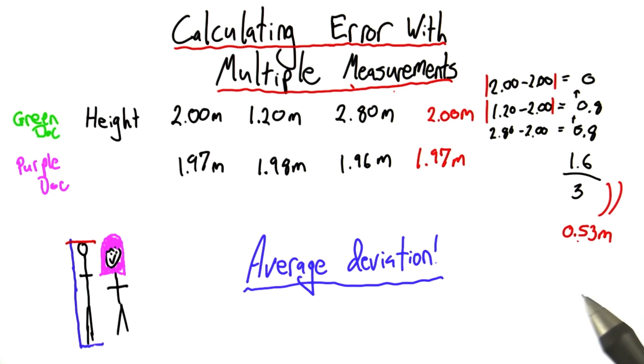We can interpret this by saying, when this doctor makes a measurement, I can only say with confidence that she's probably within 0.53 meters, though even then that's not always true. In fact, in two of these measurements, she was outside of that range.